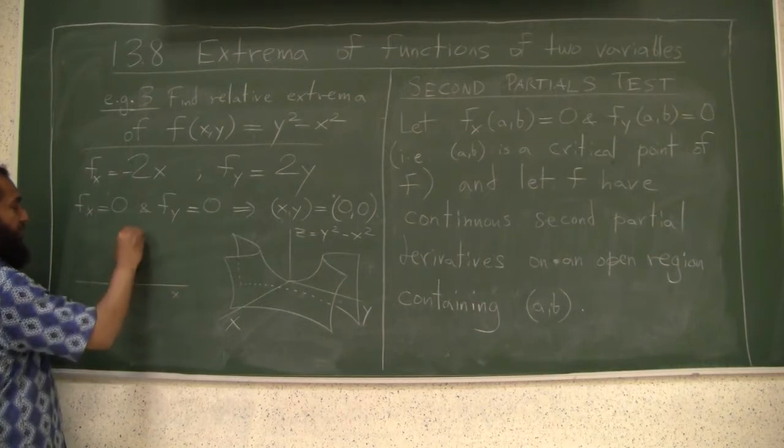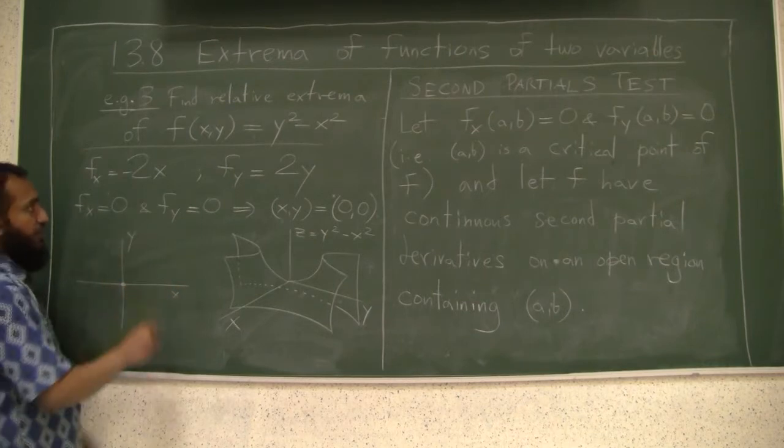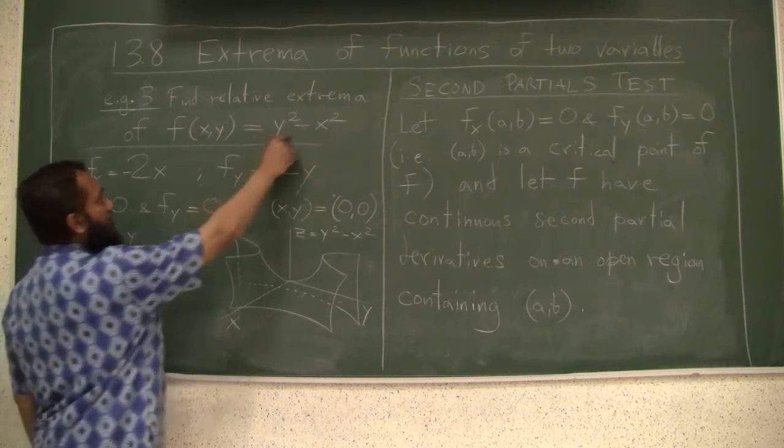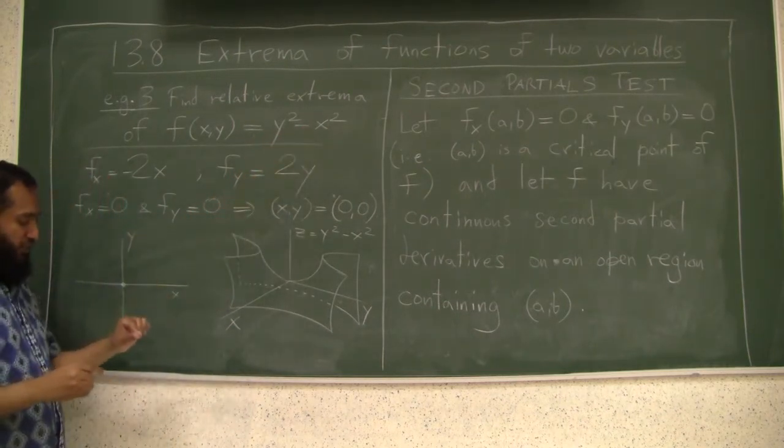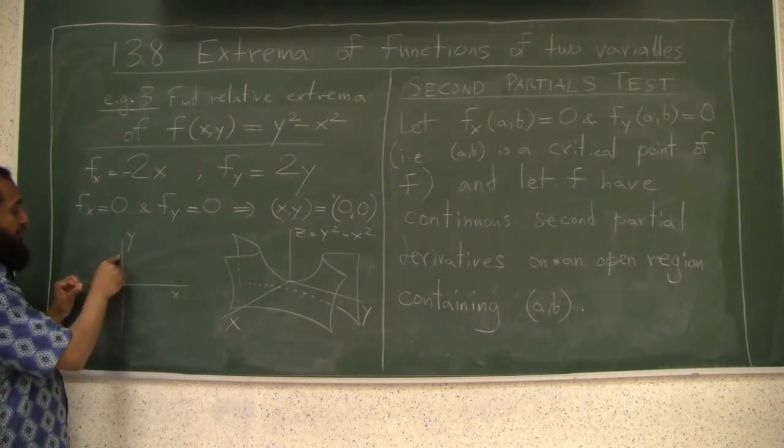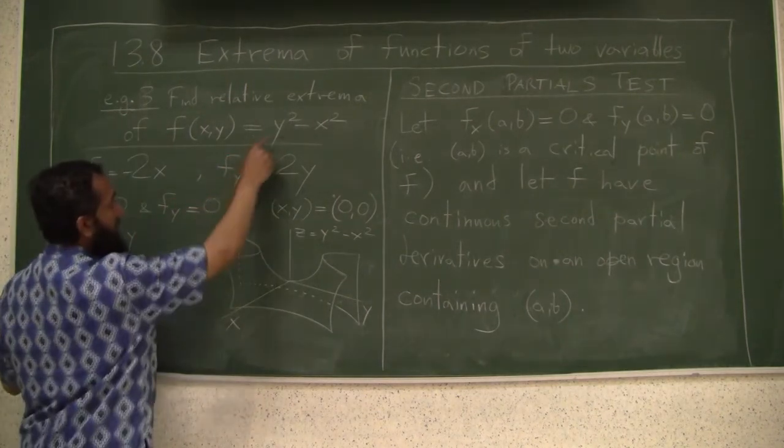If you move on positive x-axis, you make this whole thing negative. At (0,0) your value is 0, right? At (0,0) your height is 0. Move positive x-axis, you go negative. Move positive y-axis or negative y-axis, you go positive.